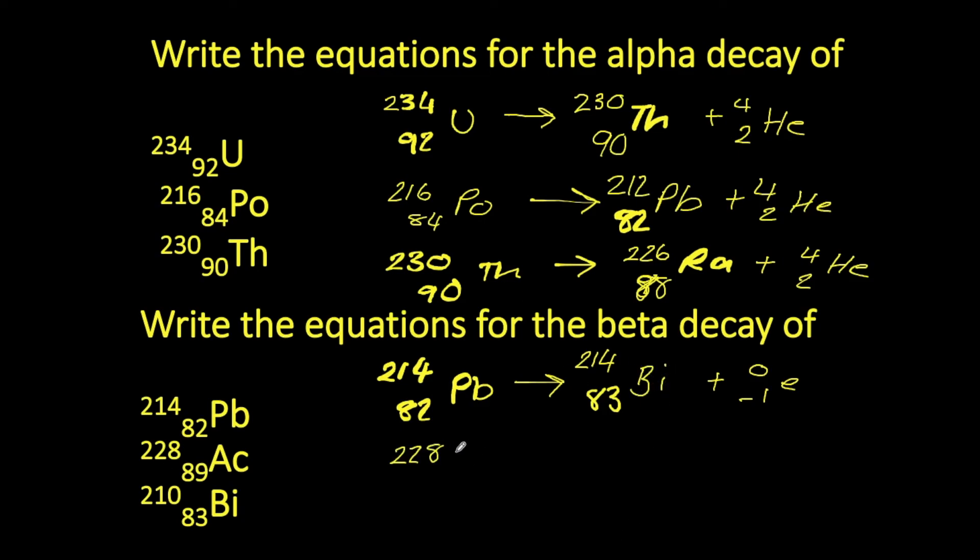In example 2, we have actinium, which has a mass of 228 and an atomic number of 89. Undergoing beta decay, it will produce this electron, its mass number will remain as 228 and its atomic number will increase by 1 to 90, meaning we have produced the thorium atom.